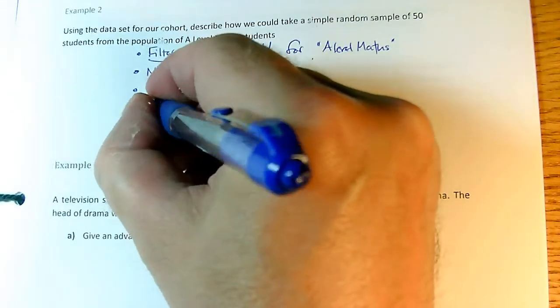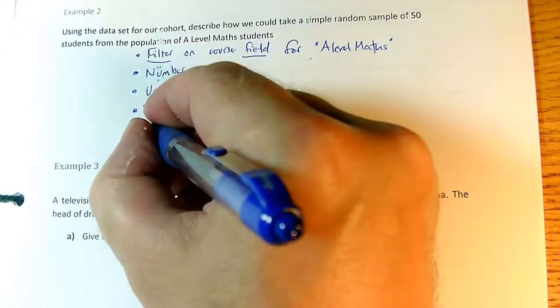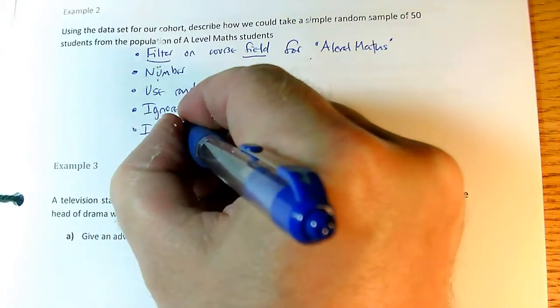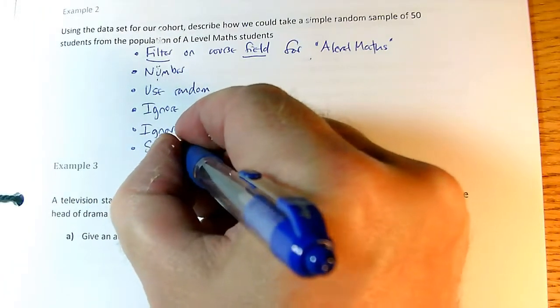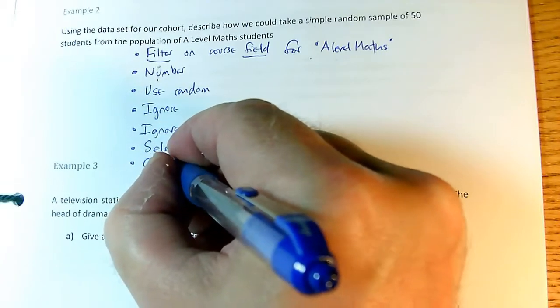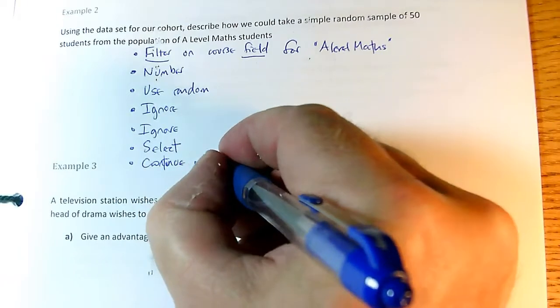We have to ignore some things, and in fact we have to ignore some other things. And then we have to select. And then we have to continue until. Okay?